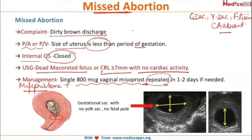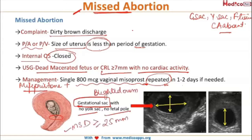This missed abortion is different from blighted ovum. In blighted ovum, only the gestational sac is present; the yolk sac does not appear and no fetal pole appears, but the mean sac diameter should be more than 25 mm. As you can see in this ultrasound image, this is a blighted ovum with an empty gestational sac.